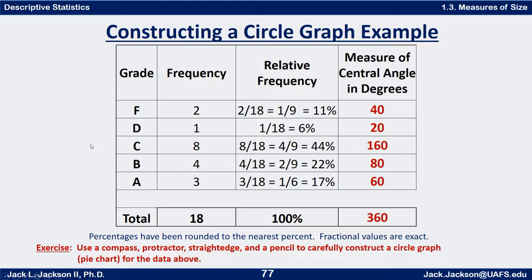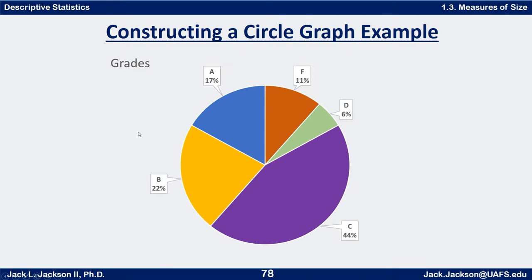You should have worked these out. The central angles are calculated by multiplying the relative frequency times 360 — so 1/9 times 360 is 40 degrees, 1/18 times 360 is 20 degrees, and so forth. These should all add up to 360 degrees. Your completed graph should look something like this — you may have chosen different colors or different placements. We can see that C's make a big chunk at 44 percent, while A's, B's, and C's make up the vast majority, with only 17 percent left for D's and F's. One thing that's worth noting: since this is ordinal data, it would probably be better represented in a bar graph.